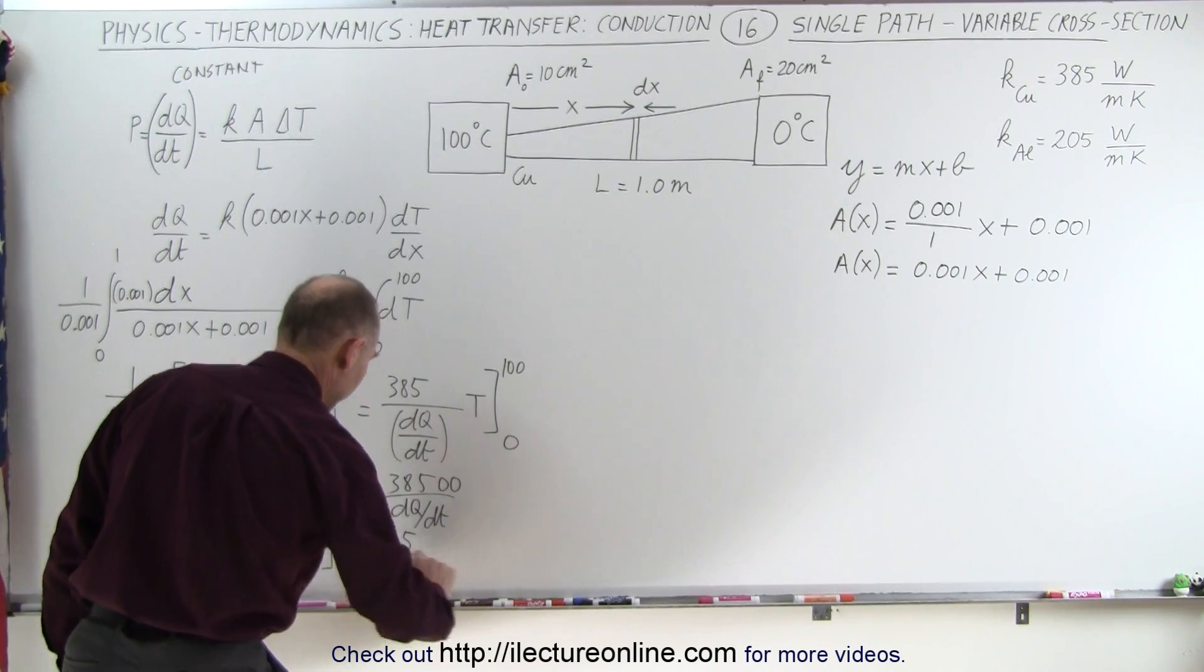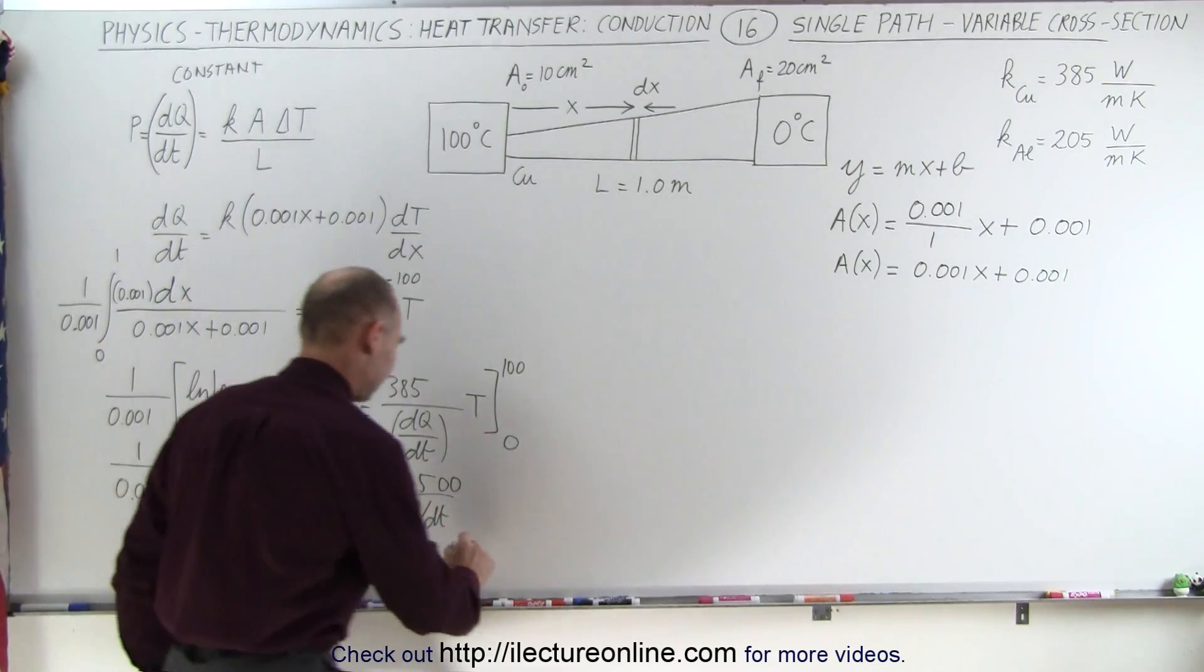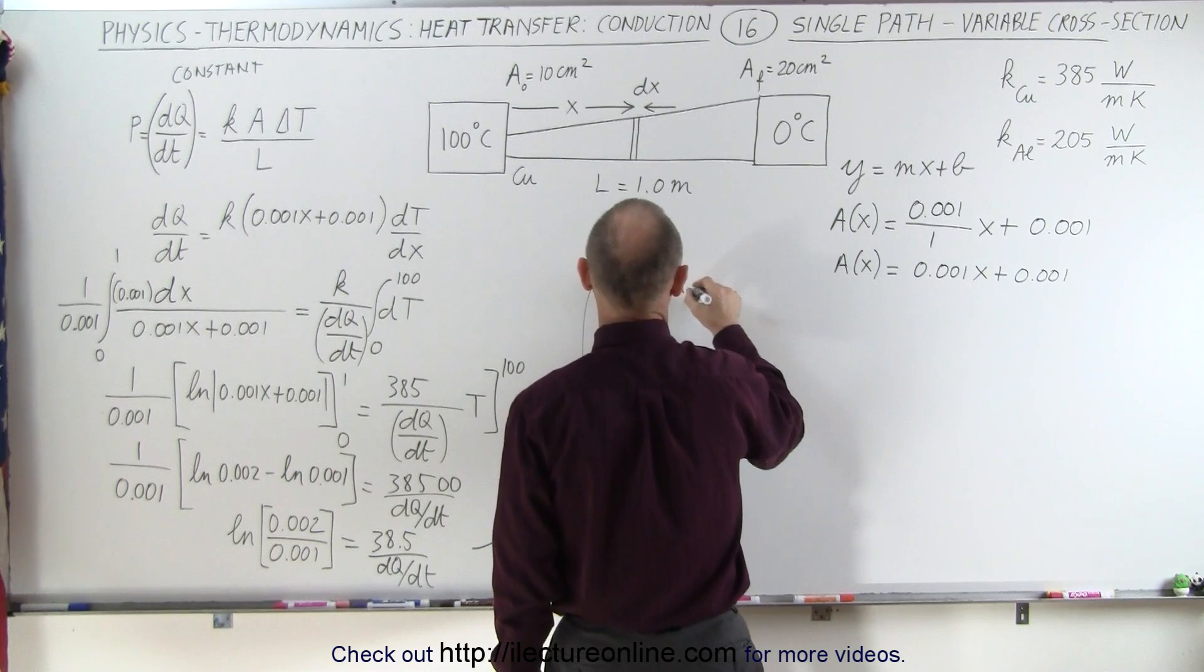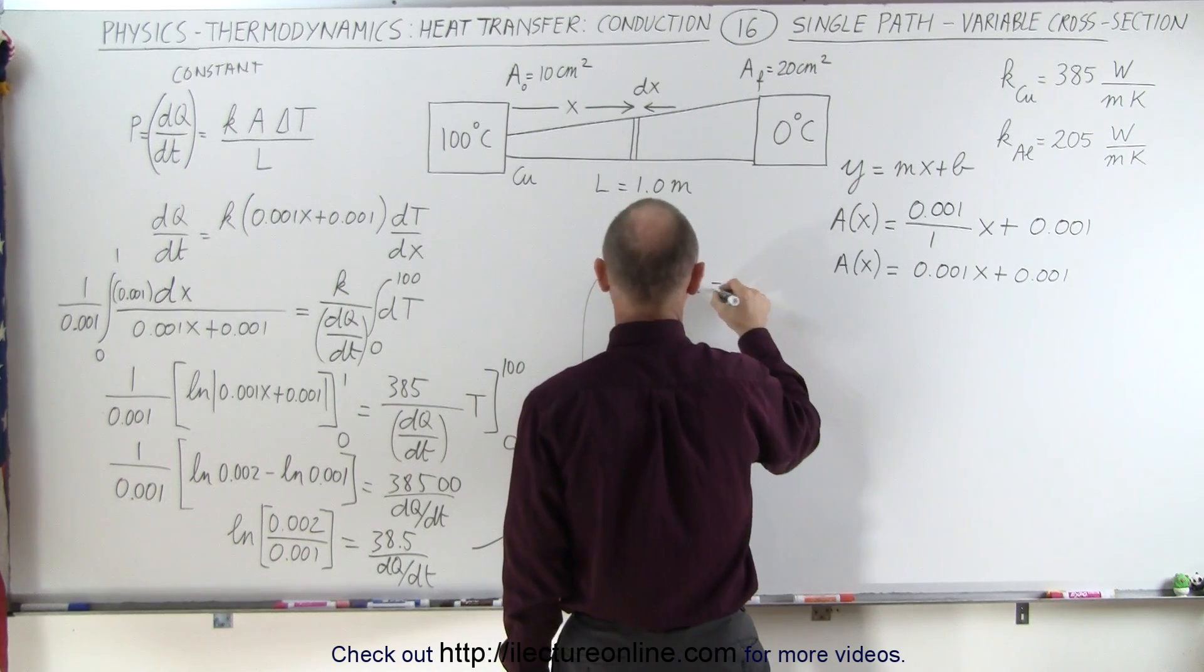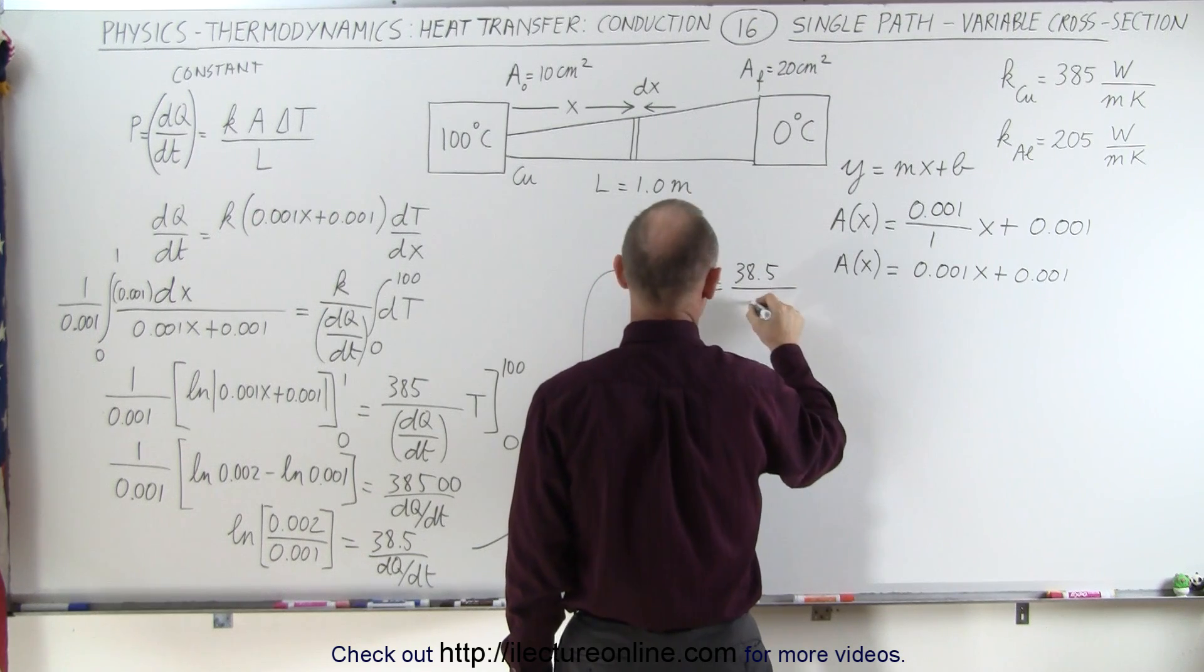We've got room here. So let me now move on to the other side and see what we get. So over here, we get the natural log of 2 is equal to 38.5 divided by dQ/dt.